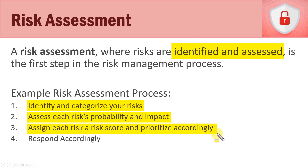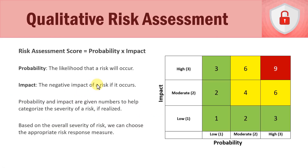After assessing risks, we assign each one a risk score and prioritize them accordingly — that's part of the qualitative risk assessment. Lastly, we respond accordingly. We'll talk about different ways to respond to various types of risks. That's our high-level overview of a risk assessment.